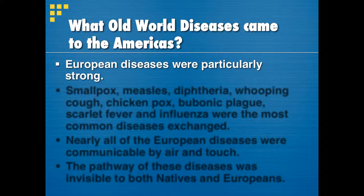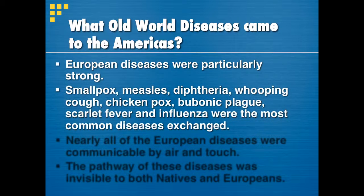One thing that's important to understand is that the diseases that started off in Europe were extremely strong. Part of the reason they were strong is because the Europeans had developed pretty strong immune systems, so the diseases were always struggling to become stronger than the European immune systems. Lots of diseases from Europe had never been seen in the Americas and were introduced by Europeans who came over on their ships.